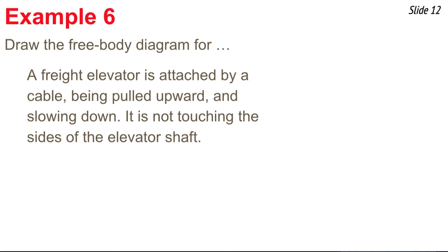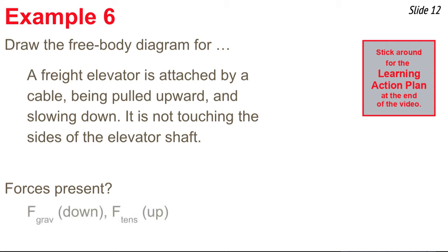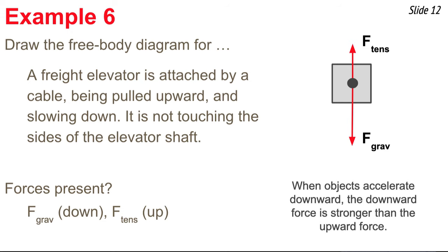Our last example: a freight elevator attached by a cable is being pulled upward and slowing down; it's not touching the sides of the elevator shaft. So the forces present are gravity down and tension from the cable pulling up — only two forces. When I draw the force diagram, I put two arrows, and I size the gravity arrow to be bigger than the tension arrow because the object is accelerating downward. An upward-moving object that's slowing down must have more down force than up force to slow it down.